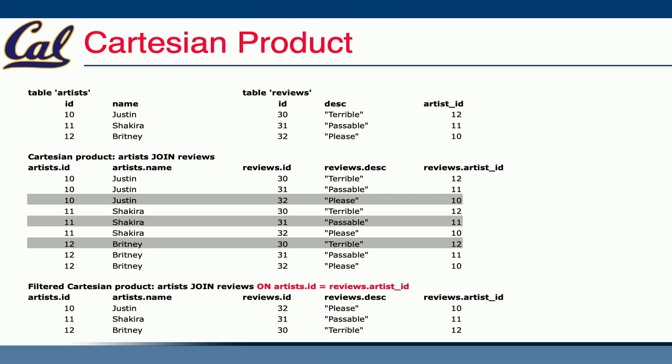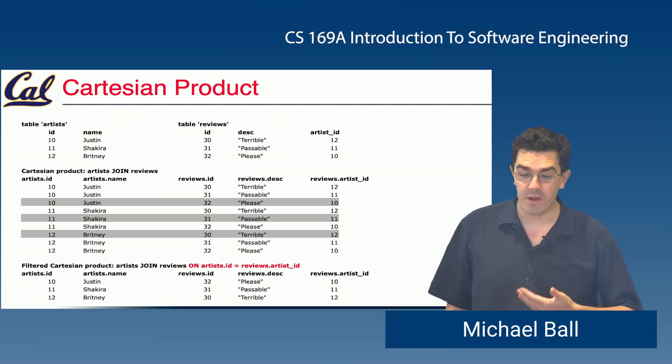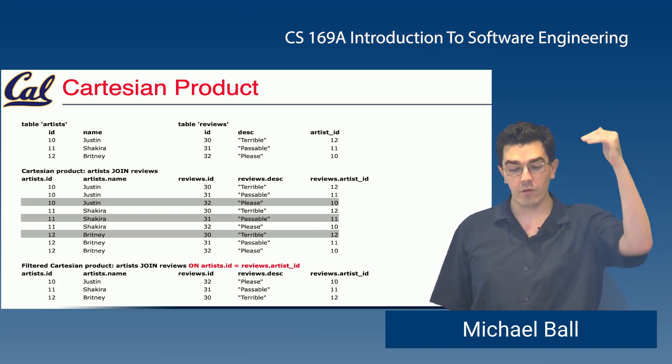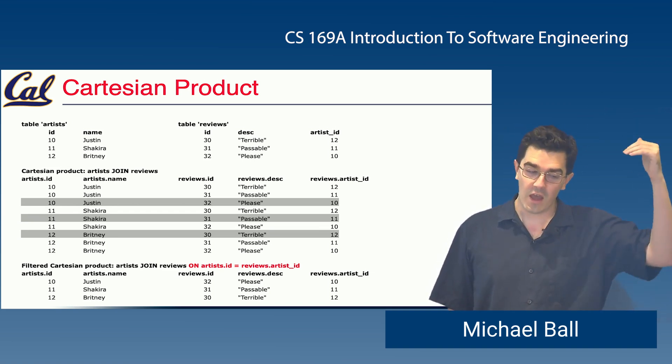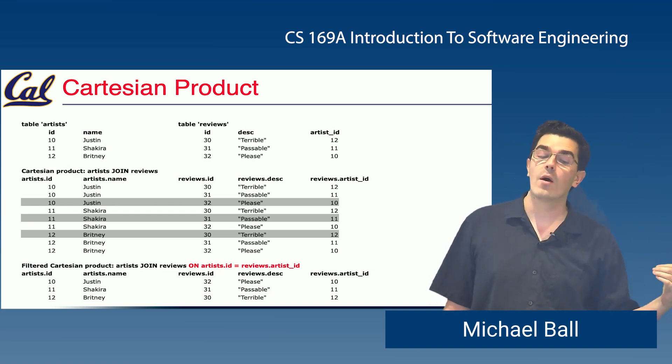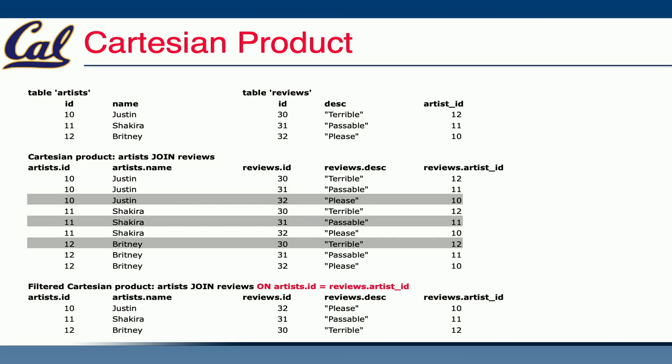The standard way to do this is what's called the Cartesian product. This basically says: give me every single combination of table one with every row of table two. Here we have two tables that each have three rows; the Cartesian product would be nine total rows — every combination of A with every combination of B.